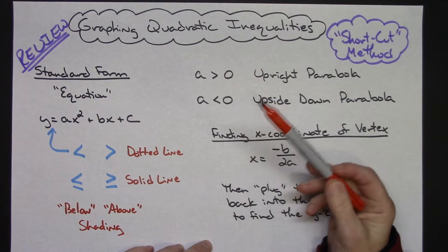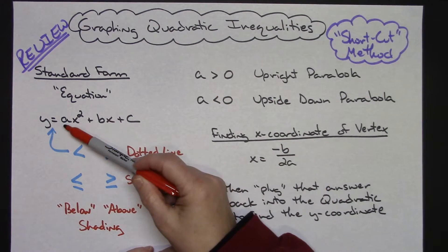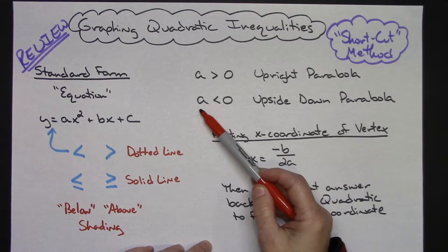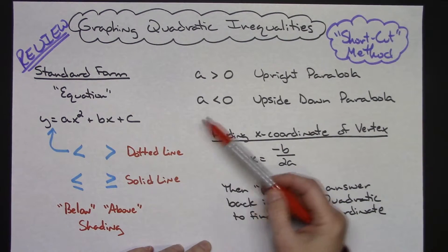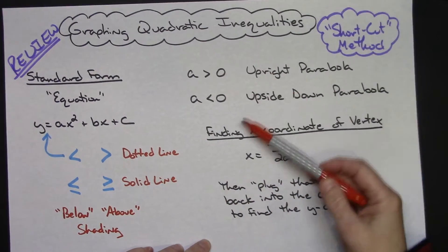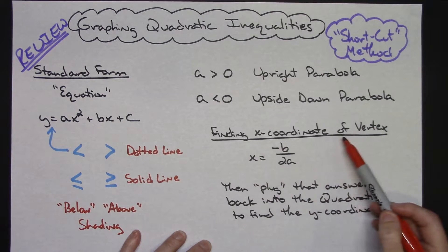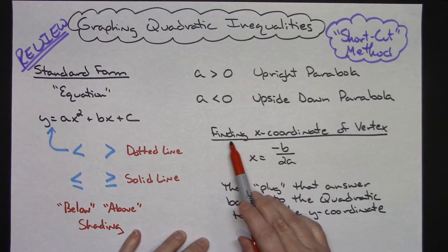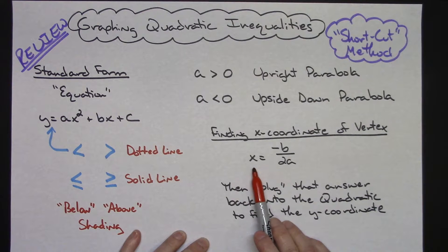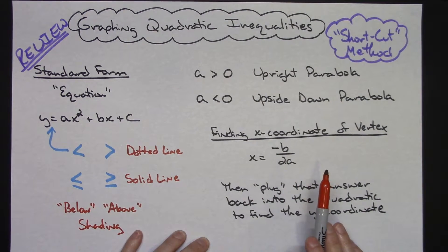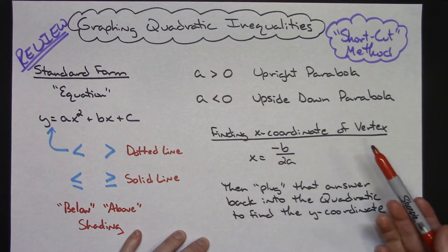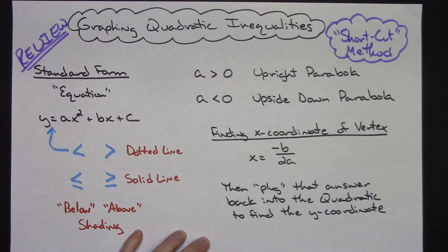If the leading coefficient a is greater than zero or positive, then you're going to have an upright parabola — an upright U shape. If a is less than zero, you're going to have an upside down parabola. If you are in standard form and trying to find the vertex, my shortcut method is going to require you to find the vertex. You can find the x coordinate of the vertex by the formula x equals negative b over 2a, then plug that value back into the quadratic to get your y coordinate.